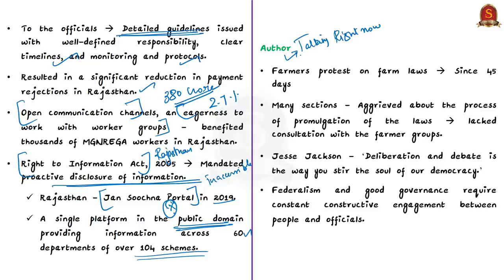It has been 45 days since lakhs of farmers have gathered in Delhi protesting the farm laws. Setting aside the merits and demerits of the laws, many are aggrieved about the process — because there was a lack of consultation with farmer groups. Any law you take, there will be merits and demerits. But what they are telling is there was lack of any consultation with farmer groups. Very often, policy makers ignore the need for dialogue and deliberation with beneficiaries. The author is trying to tell us that consultations are needed during the initial stages of law and also during implementation.